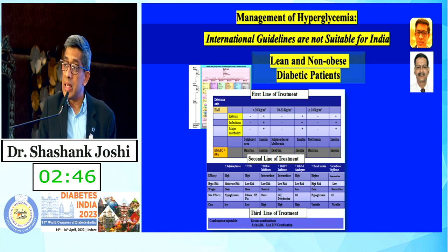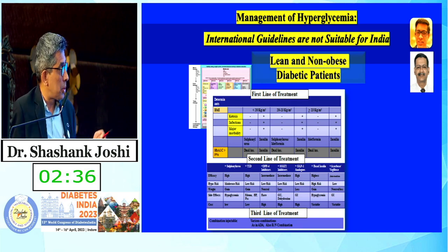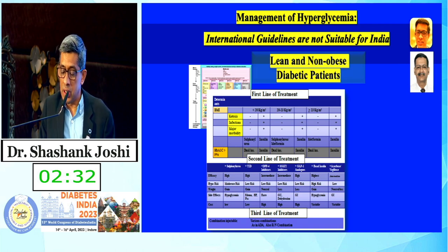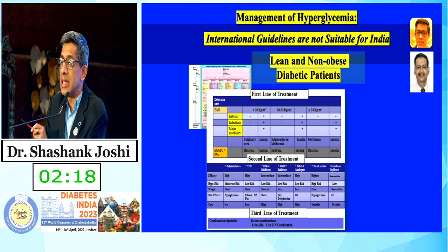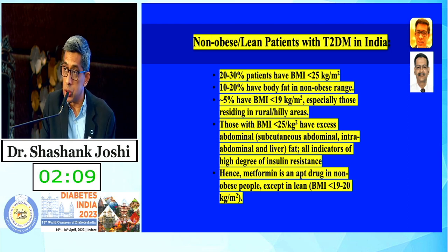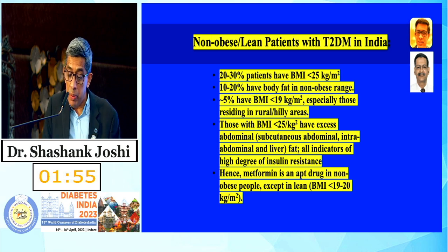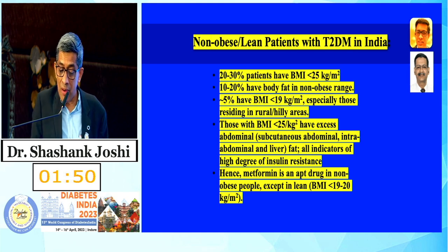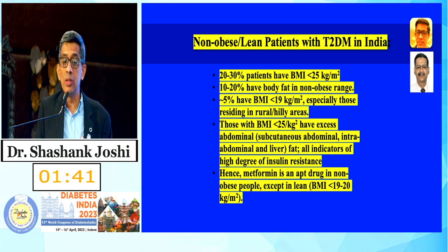Professor Mishra recognized that international guidelines are not always suitable for India. Lean and non-obese diabetic patients, particularly from hilly regions with BMI below 19, need different approaches. One third or 20% of patients have a BMI below 25; 10–20% are in the non-obese range; 5% have a BMI below 19 from rural or hilly areas. However, people with BMI between 25 may have abdominal fat and insulin resistance, and metformin may still be apt for all non-obese populations except the lean ones with BMI below 19–20.